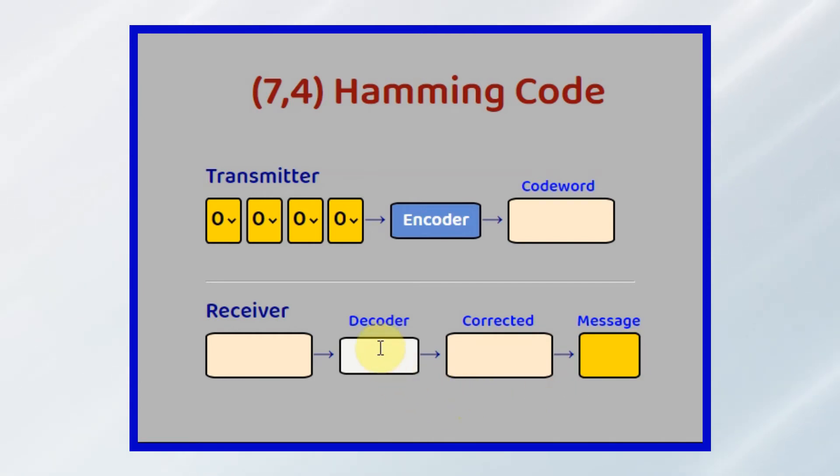If the decoder locates a single error, it will correct it, and then extract the message and pass it to the destination.